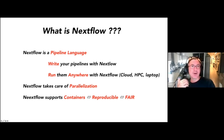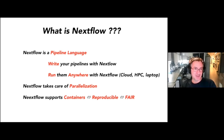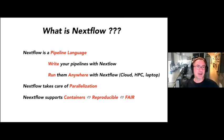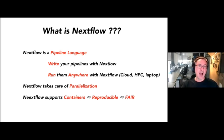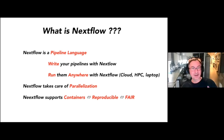Nextflow will take care of parallelization — what some computer scientists call embarrassingly parallel computational problems. It's a problem where the parallelization is implicit. Embarrassingly parallel means you have thousands of samples that are all identical and you want to process them all in parallel, because they don't have to talk to one another to be properly processed. That's typically the kind of parallelization Nextflow is going to take care of for you.